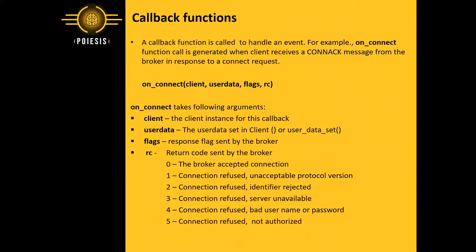A callback function is called to handle an event. For example, the onConnect function call is generated when the client receives a connect message from the broker in response to a connect request. The onConnect syntax is given here and we used this function in our previous session.